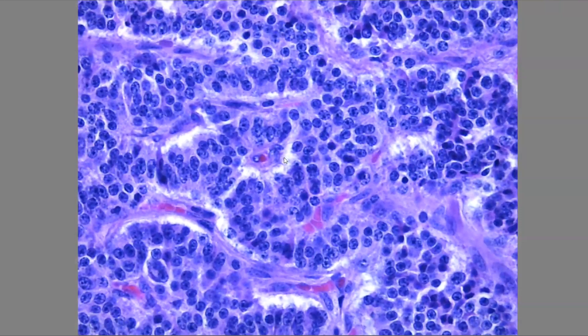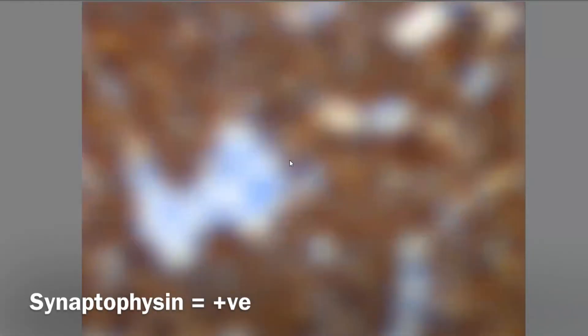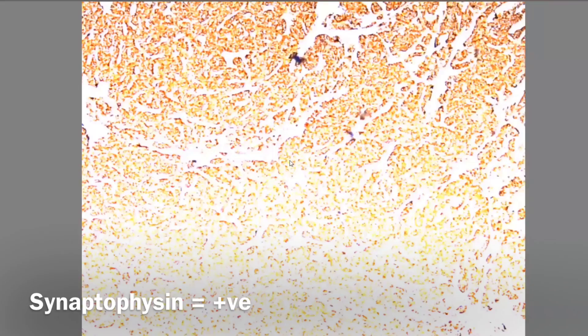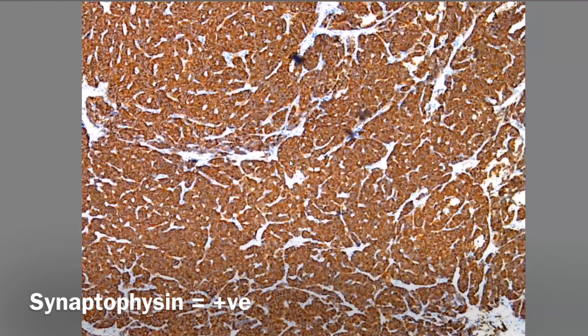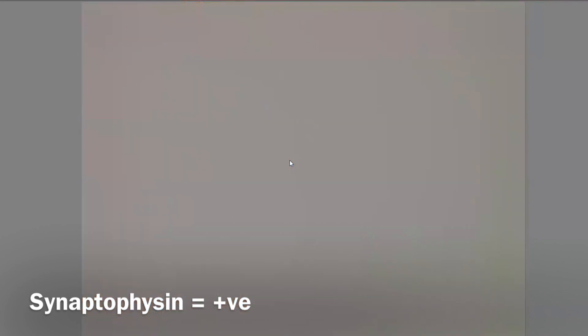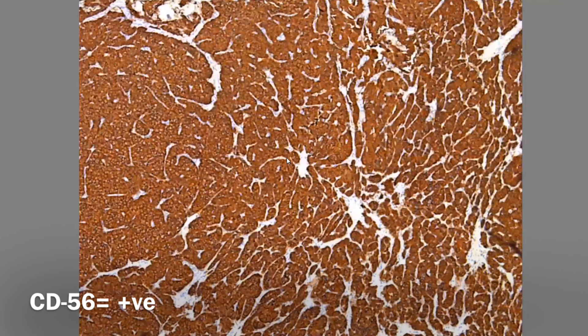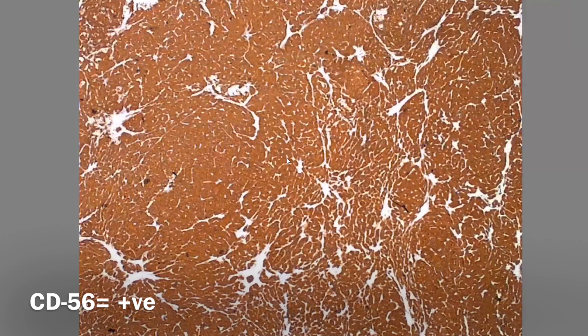Now we will look at the immunostains. These cells have granules that we can stain. In general, the neuroendocrine tumor carcinoid is positive for low molecular weight cytokeratins but lacks reactivity to high molecular weight cytokeratins. Here is the synaptophysin stain for this tumor at low magnification — as you can see, all cells show positive expression of synaptophysin. The next marker is CD56, which is also densely positive for the tumor cells in this case.